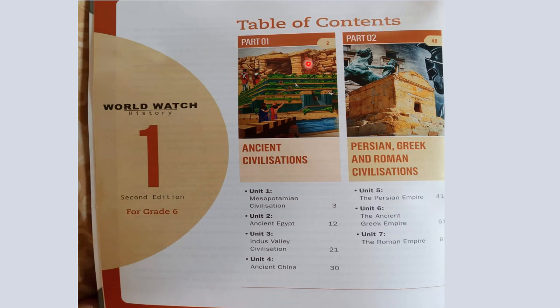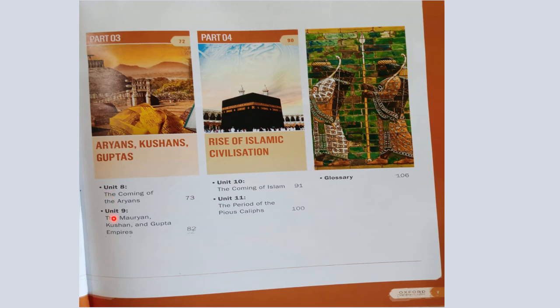Let's go to the table of contents. In Part One we will be reading the ancient civilizations: the Mesopotamian, Ancient Egypt, Indus Valley, and Ancient China. Part Two covers the Persian, Greek, and Roman civilizations. Part Three covers Aryans, Kushans, and Guptas. And in Part Four, the final part, we will be reading about the rise of Islamic civilization.